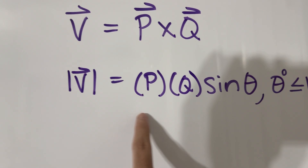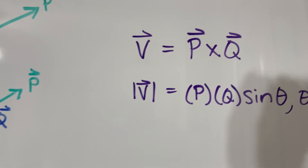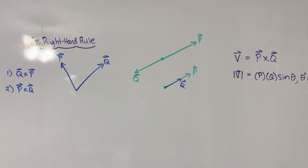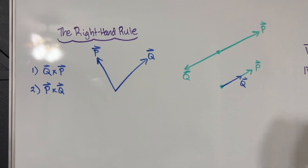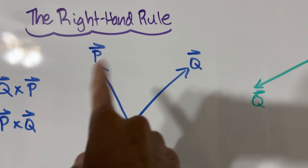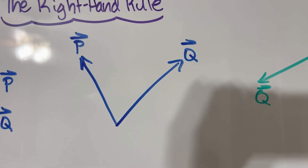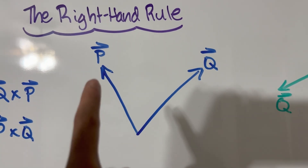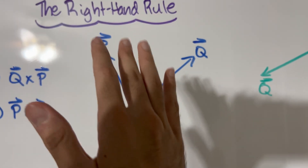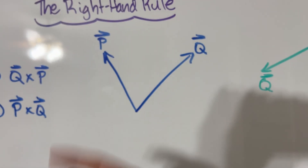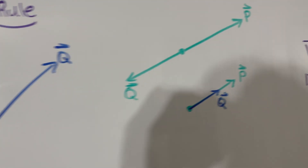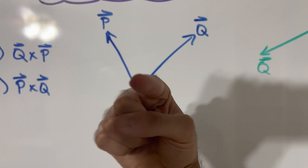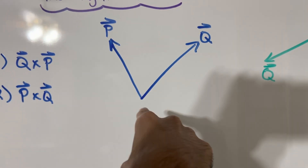This formula just gives us the magnitude. To figure out the direction of V, imagine this whiteboard is the plane we're looking at — the 2D plane where vectors P and Q live. These are coplanar forces, meaning force vectors within the same plane. When we take the cross product, we use the right-hand rule to figure out which way the resultant vector product V is oriented — either out of the plane toward the camera, or into the whiteboard.